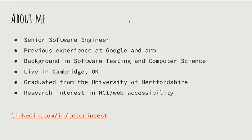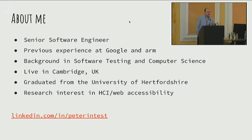A little bit about me. I'm a software engineer. I work for Grail — we do blood testing for cancer. Previously, I worked at Google and Arm. I live in Cambridge, so this is a bit of a trek for me to come here today. And my research interest is also in web accessibility, which is partly why I'm doing this talk.